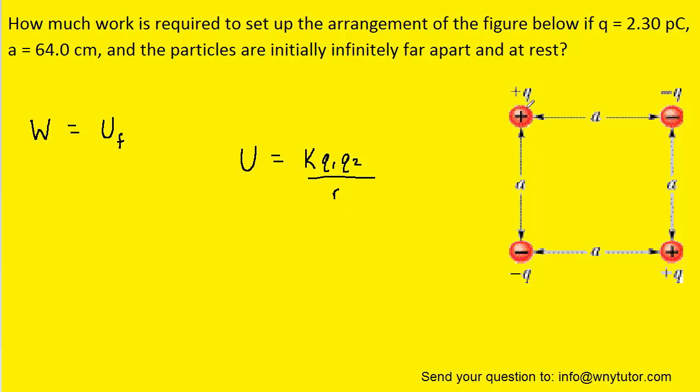What we can do is imagine that initially none of these charges are present. So we can empty the space here. Now, what we can do is bring in the first charge. Maybe we can bring in the one that was in the upper left-hand corner. So we'll just draw a charge there. The work required to move that charge in is actually zero because there were no other charges present.